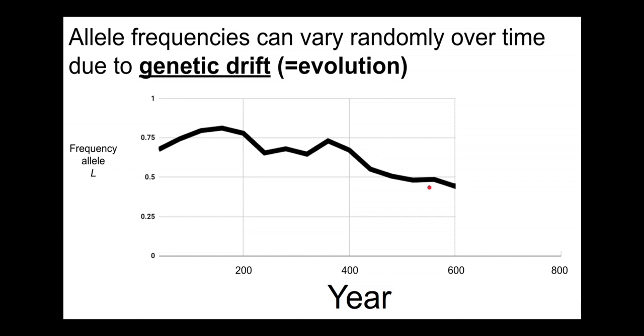Maybe it just so happens that a bunch of people who are lactose tolerant happen to get sick and not have offspring for a long period of time, and lactose tolerance had nothing to do with that happening. So the lactose tolerance gene would decrease over time. That's genetic drift.